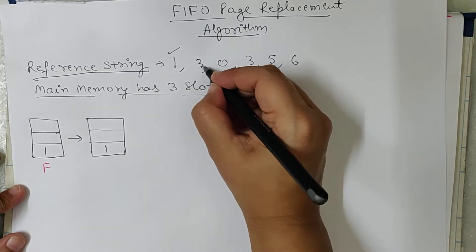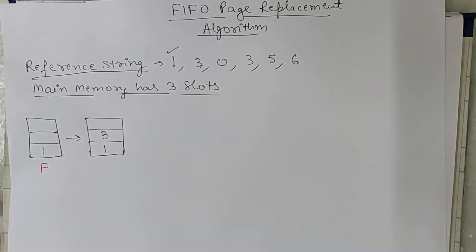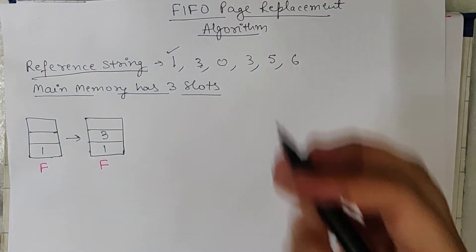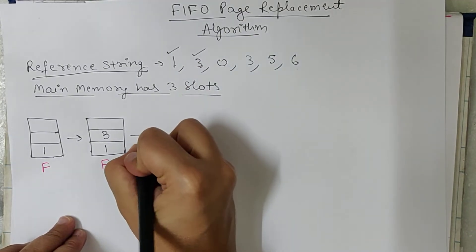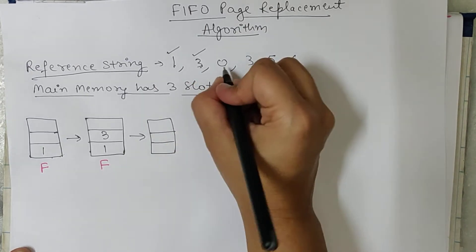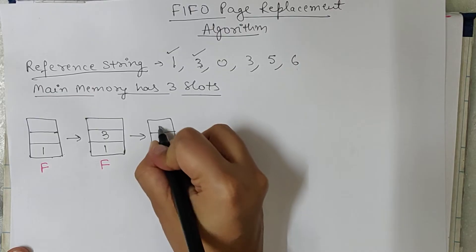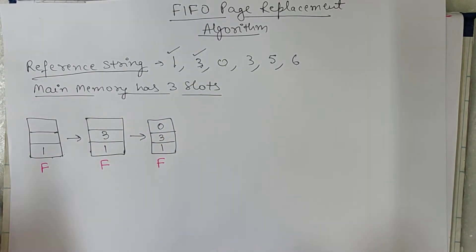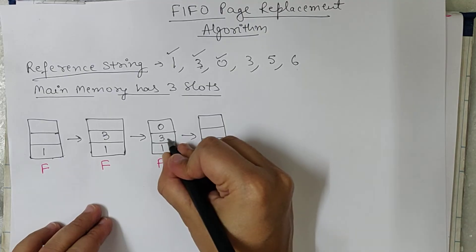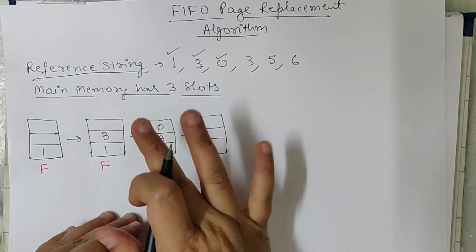Now CPU wants to execute page number 3. Page number 3 is also not present in main memory, so we place it in main memory and a page fault occurs — mark it F. Now CPU wants to execute page number 3 again and page 3 is present, so there is no page fault. This is a page hit, denoted as H.